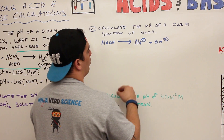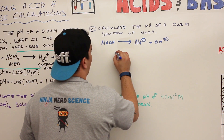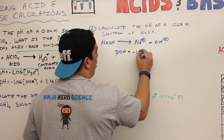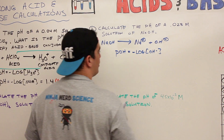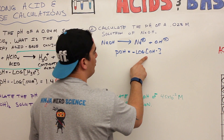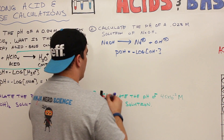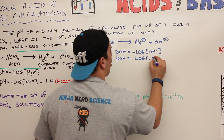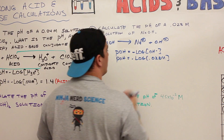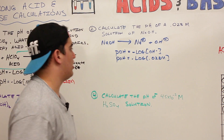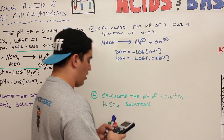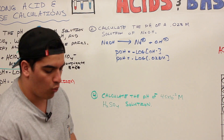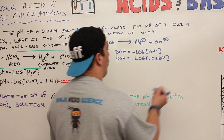Since we have OH⁻, we have to use the pOH formula. pOH = −log[OH⁻]. So we plug in: pOH = −log(0.028 molar). Taking the negative log of 0.028 in the calculator gives us 1.55.